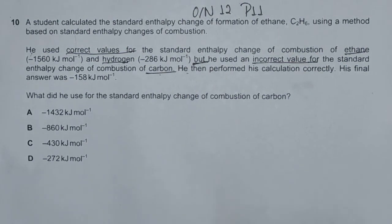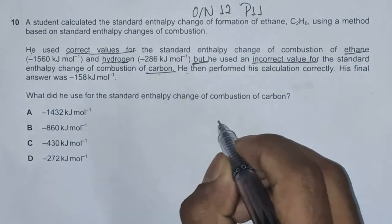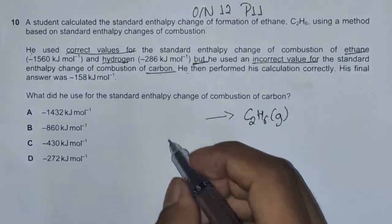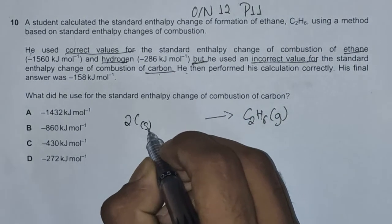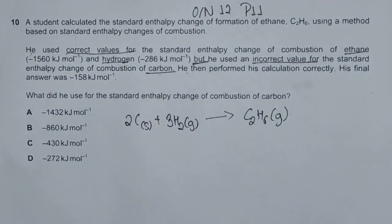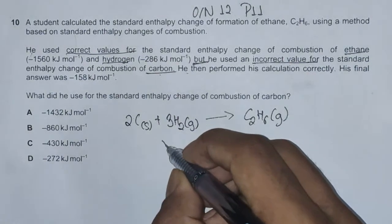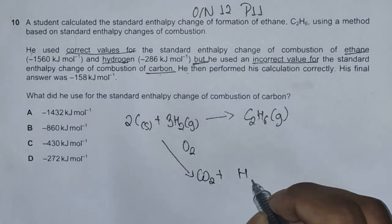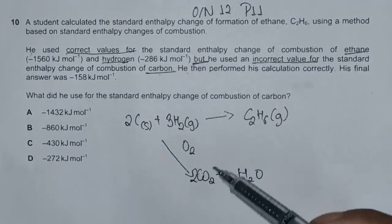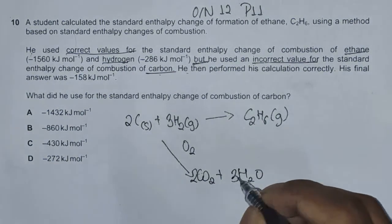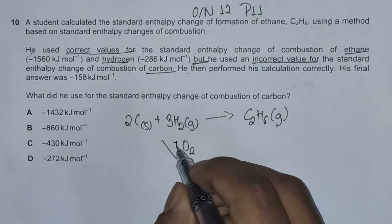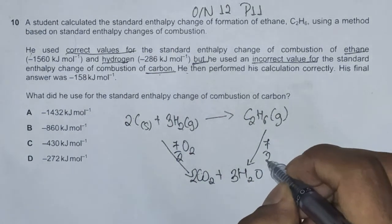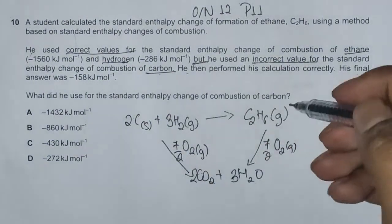Our first approach is to draw an enthalpy cycle. The final product is ethane C2H6 (gas), and its constituent elements are 2 moles of carbon and 3 moles of hydrogen. Combustion means we need to add oxygen as well, so an arrow goes down here. 2C plus 3H₂ plus O₂ gives us CO₂ plus H₂O — 2 CO₂ and 3 H₂O, with 7/2 O₂ on each side.